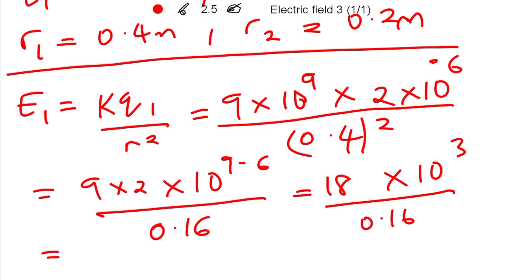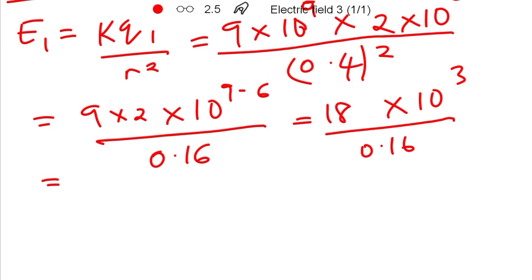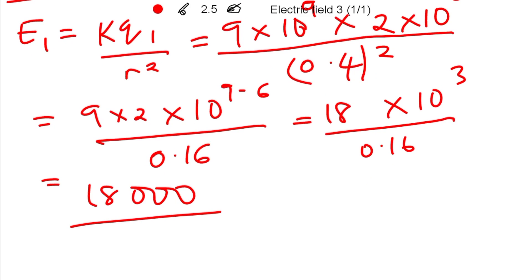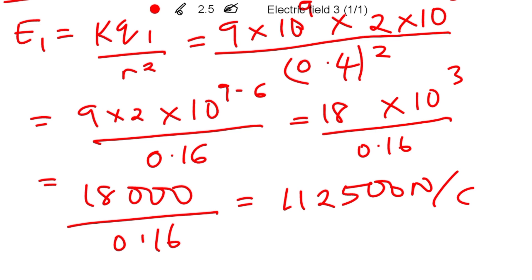This also equals eighteen thousand divided by 0.16, which equals 112,500 newtons per coulomb. That is the value for E1.